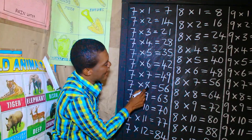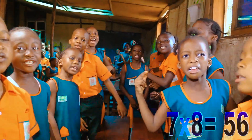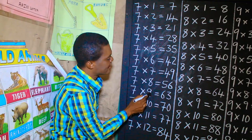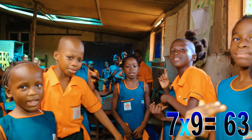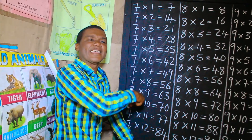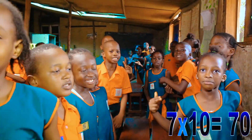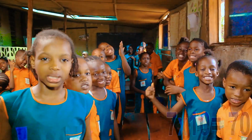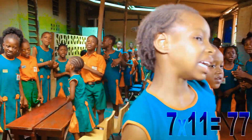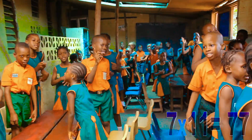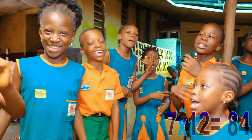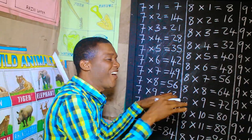7 times 8 is 56. 7 times 9 is 63. 7 times 10 is 70. 7 times 11 is 77. 7 times 12 is 84.